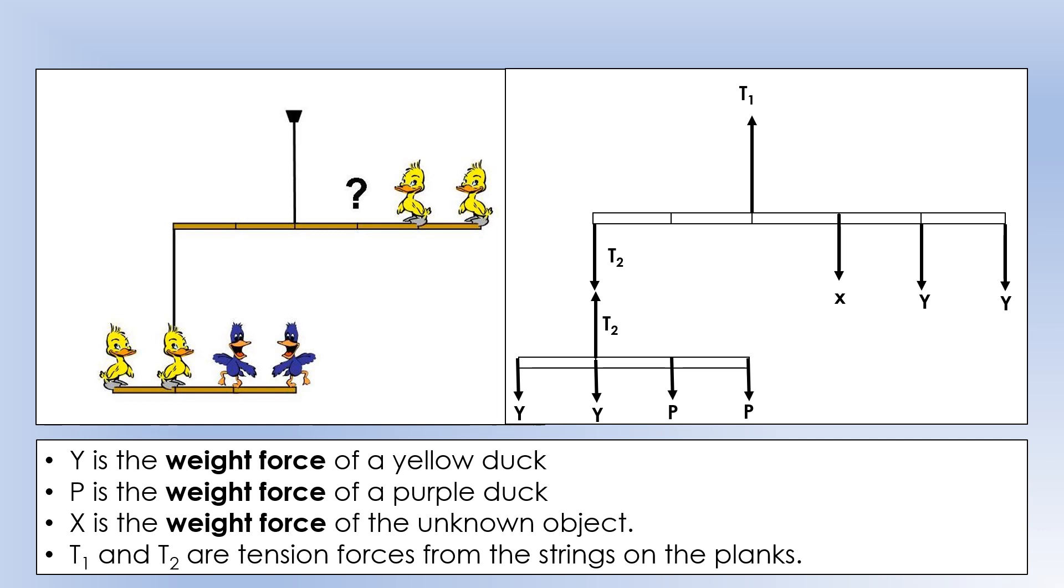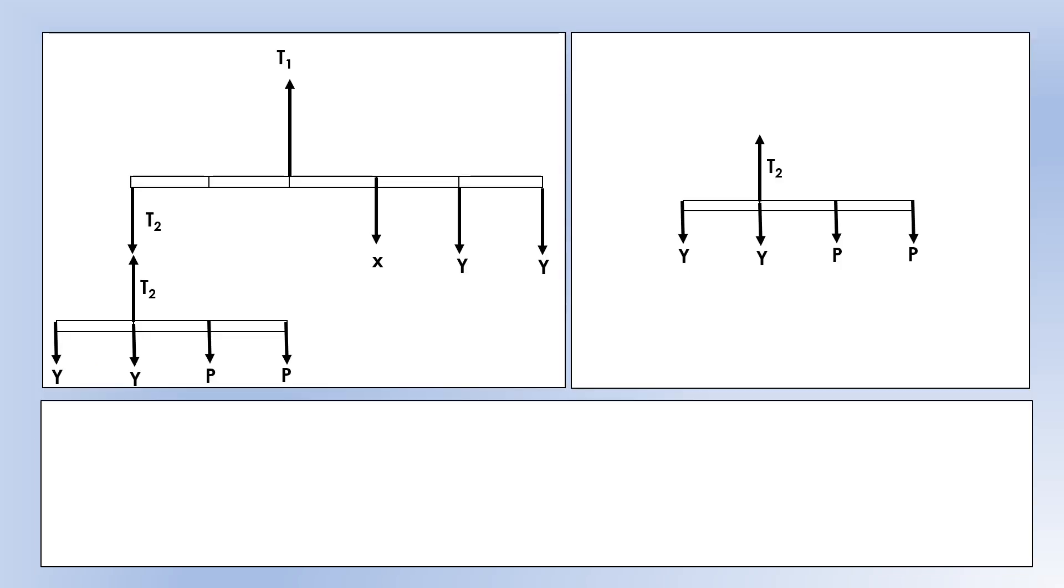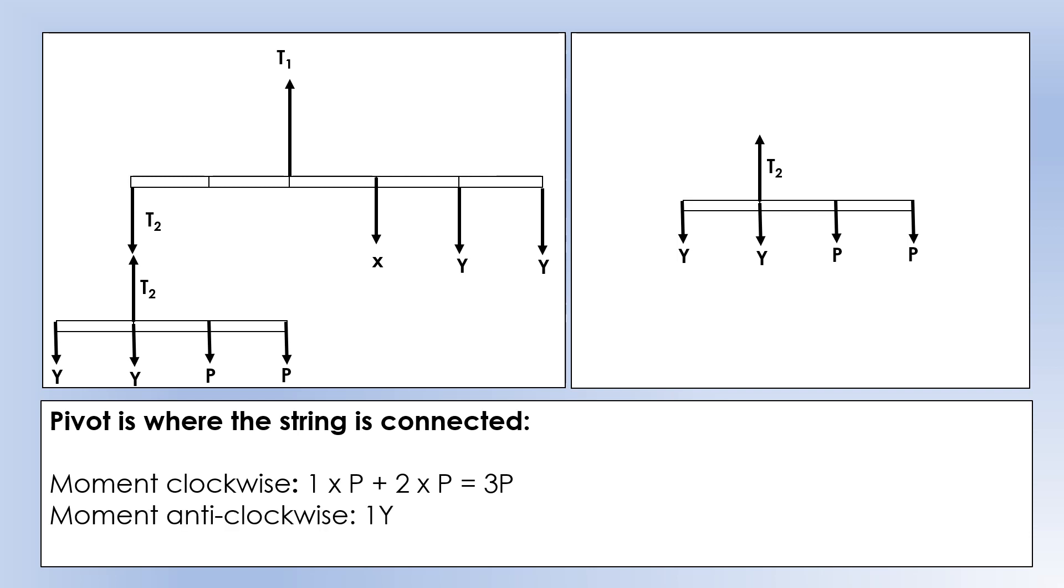Okay, so what we're going to do is we're going to apply the principle of moments to this. And we're going to apply it specifically to this bottom section down here. Because if the whole system is in equilibrium, each individual part of it must also be. So I'm going to use where the string is connected as the pivot point, so where T2 is acting. So the moment clockwise is going to be 1 times P plus 2 times P, because those are both trying to make it rotate clockwise. And the moment anticlockwise is just 1 times Y. So if it's in equilibrium, what that means is 1Y is equal to 3P, because the moment clockwise is equal to the moment anticlockwise. Okay, so that's that bottom section.